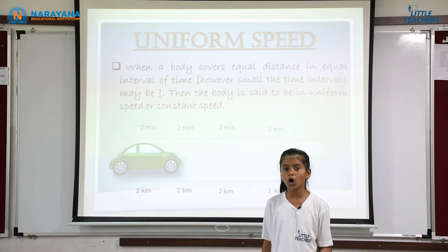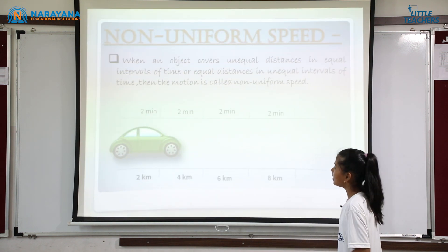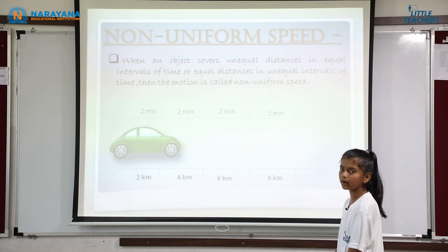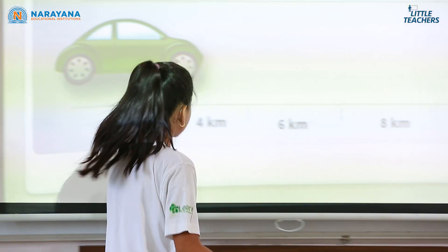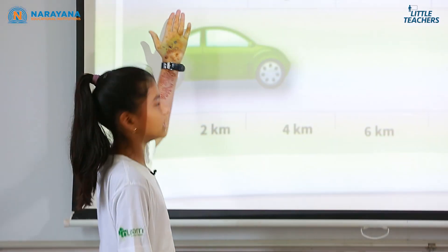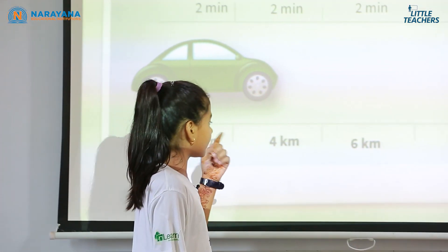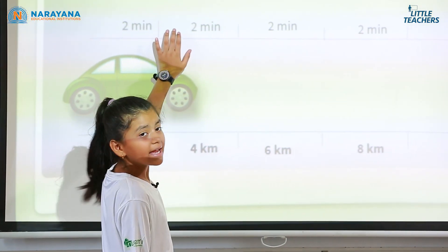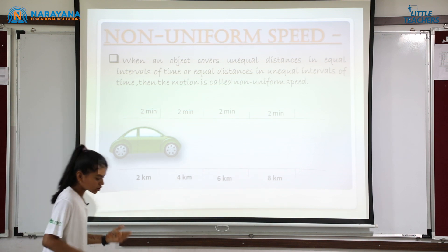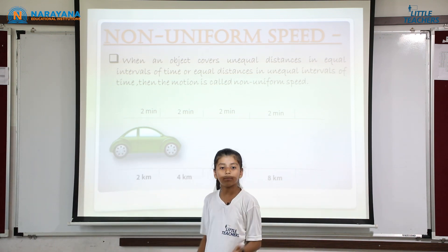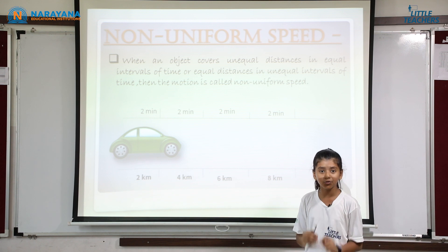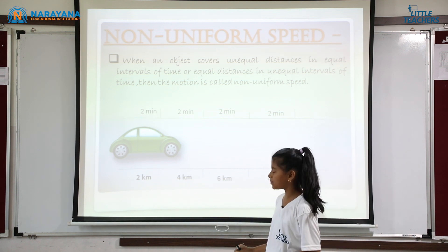Now let us learn non-uniform speed. When a body covers unequal distance in equal intervals of time. As we can see, this car is covering 2 kilometers in 2 minutes, then 4 kilometers in 2 minutes, and again it keeps changing its distance while the time interval remains the same. This is known as non-uniform speed.